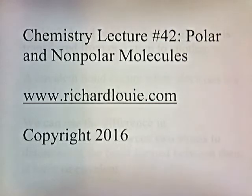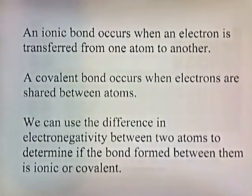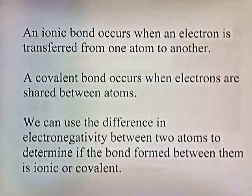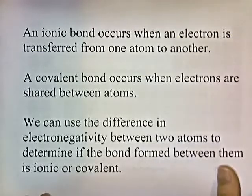Chemistry lecture number 42: Polar and Nonpolar Molecules. An ionic bond occurs when one electron is transferred from one atom to another. A covalent bond occurs when electrons are shared between atoms. We can use the difference in electronegativity between two atoms to determine if the bond formed between them is ionic or covalent.